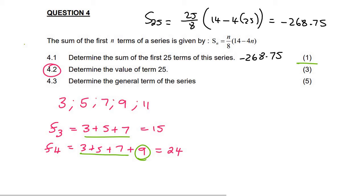So if you want to work out what term 4 is, you could also say that it's the sum of the first four minus the sum of the first three, because then these cancel. And then you're just left with 9.